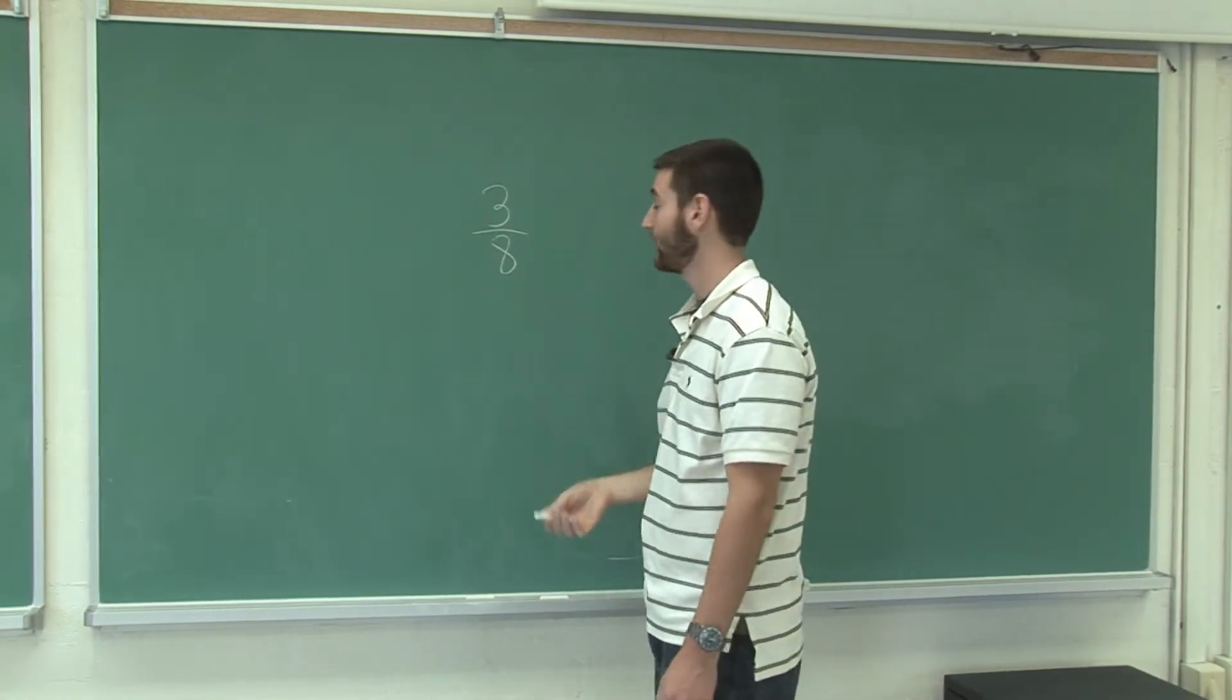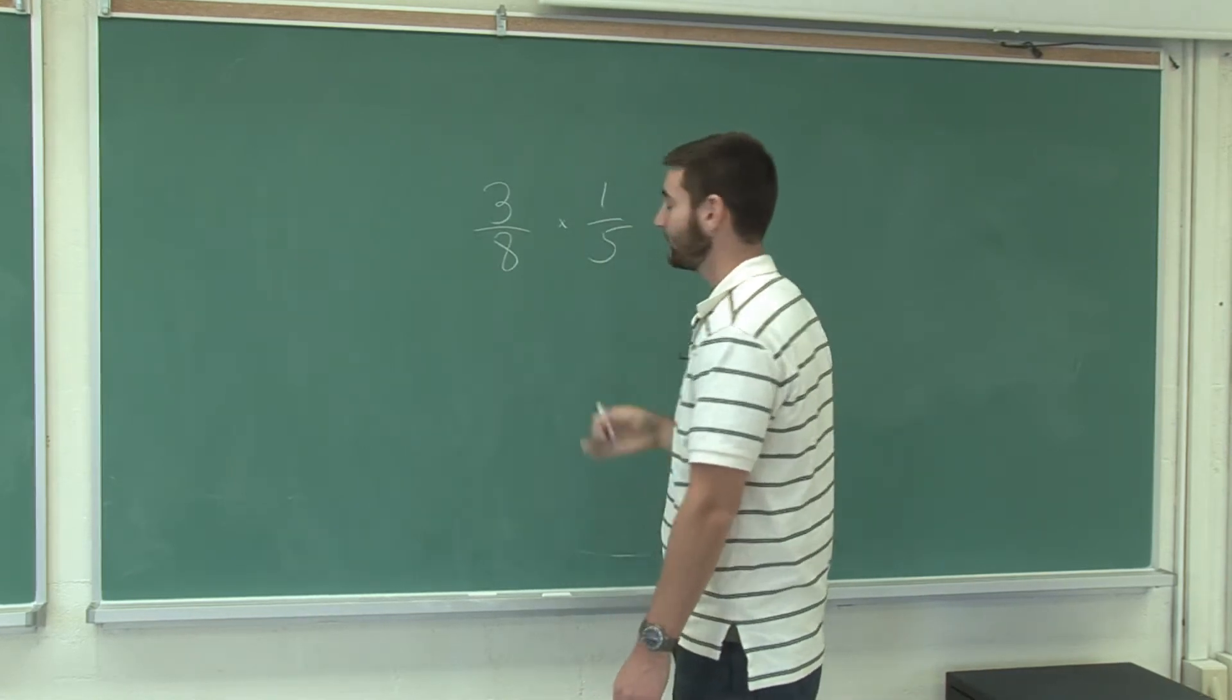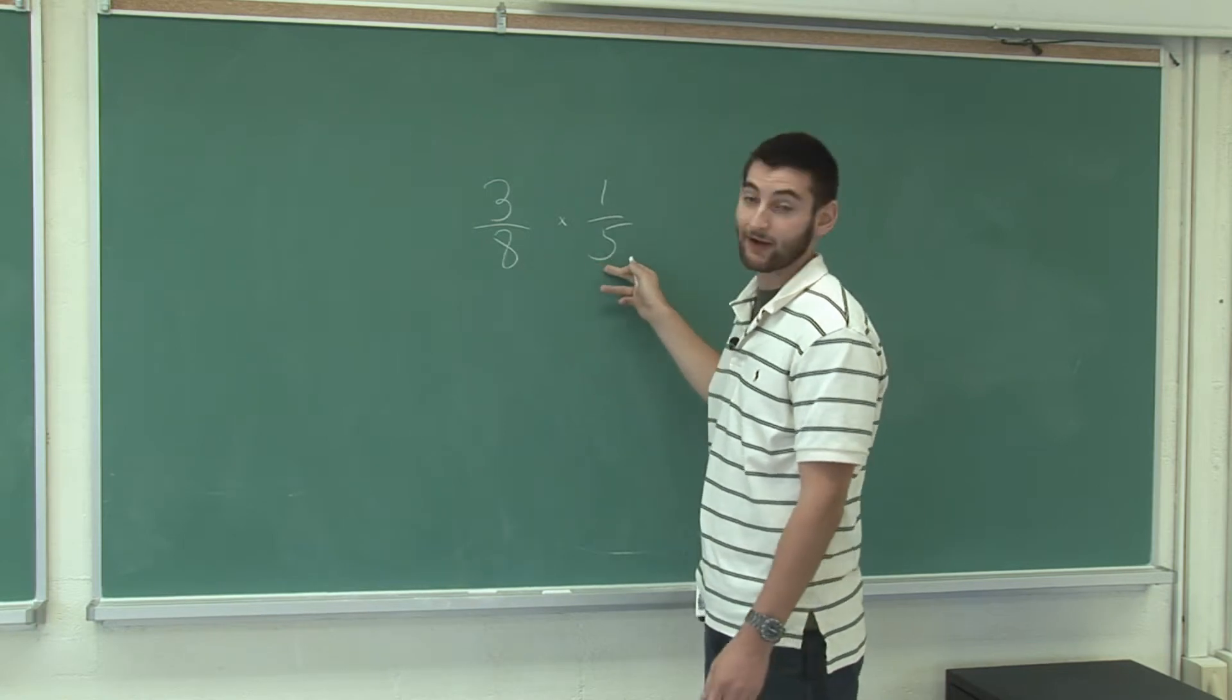and we want to multiply it by another fraction, say, one-fifth, the step that we're going to do is we're just going to multiply the numerators together and then multiply the denominators together.